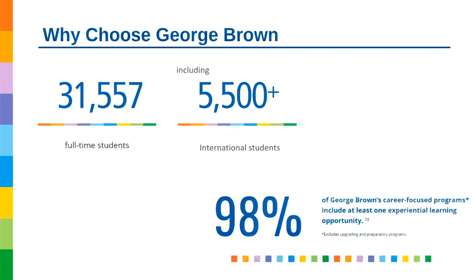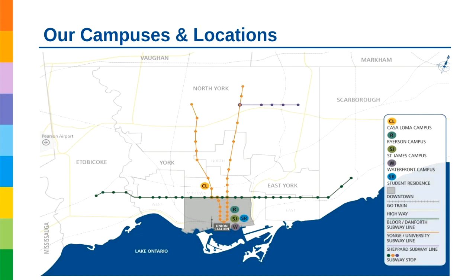Moving on to our campus locations: we are the only college with most of its locations in the heart of downtown Toronto, close to where many top companies have their headquarters — the financial district, top hotels, restaurants, hospitals — which provides our students with access to top employers for field education opportunities. We often say that the city becomes your classroom. We have over 31,000 full-time students studying out of our six urban locations, each designed specifically for the programs that run there.